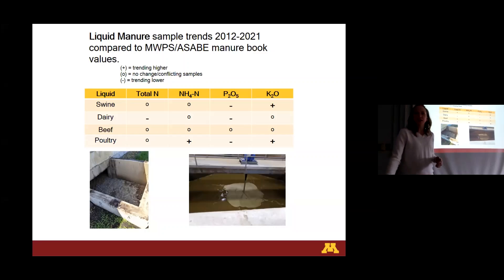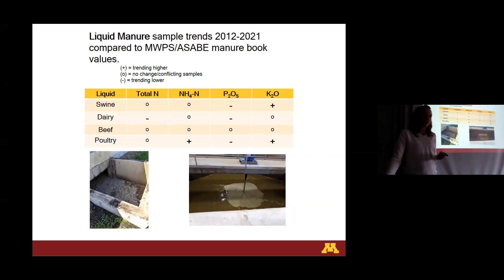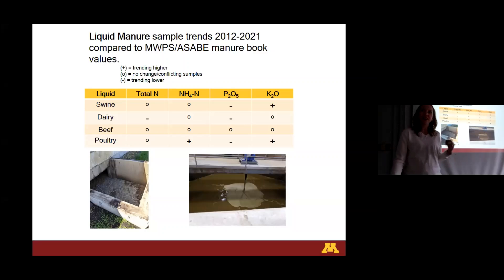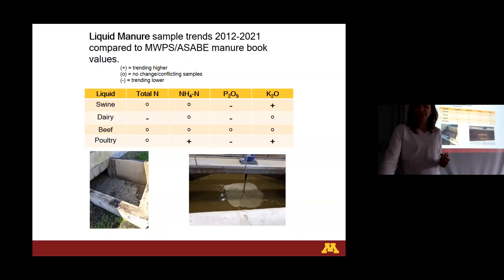Just a quick side note: swine manure samples can really change based on equipment. Newer, more well-maintained equipment with less water wastage can make a difference on what you have in your samples. You could tell if they changed out their waterers, and that could even make a difference. You could also tell who was well-maintaining their facilities and not having leaks, compared to a new facility or someone that was a little more lax in that area.